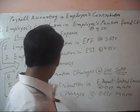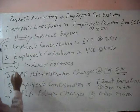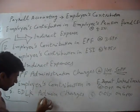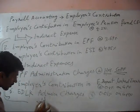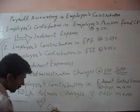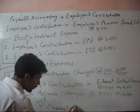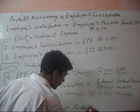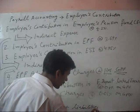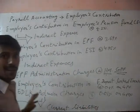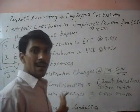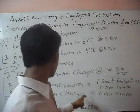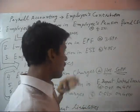These three things — pension fund administration charges, deposit linked insurance, and its administrative charges — are current liabilities. These are not indirect expenses but current liabilities of the employer.